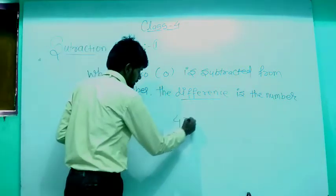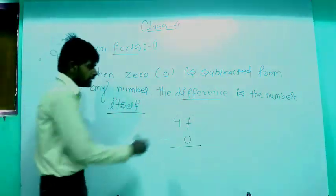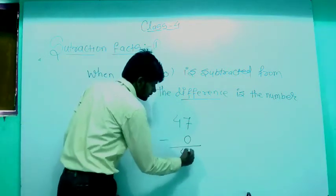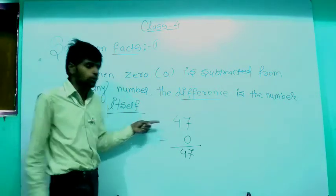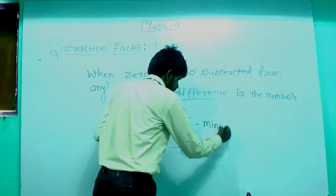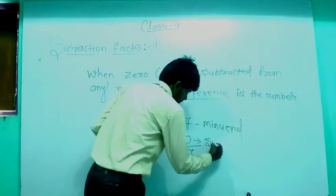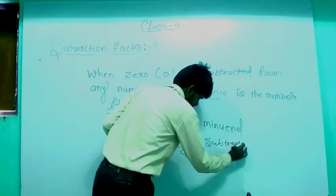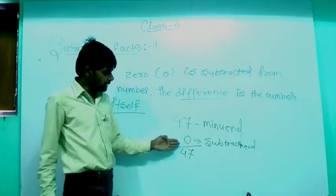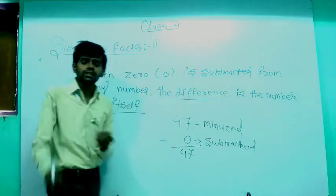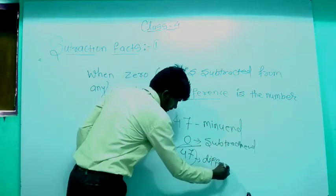Let's see the example: this is 47. Let's subtract 0 from 47. If you subtract 0 from 47, the difference is 47. So 47 is your minuend, 0 is your subtrahend, and 47 is the difference of 47 and 0.